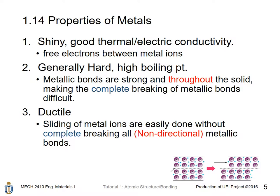Properties of metals: they are shiny and have good thermal and electrical conductivity because there are free electrons between metal ions. They are generally hard and have high boiling points because metallic bonds are strong and extend throughout the full solid, making complete breaking of metallic bonds very difficult.